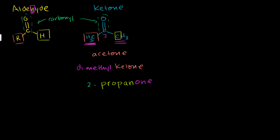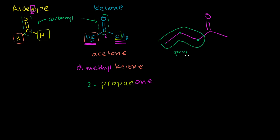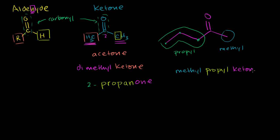Let's look at another molecule. Using the traditional naming method, on one end of the ketone we have one, two, three carbons — that's a propyl group. On the other side there's only one carbon — that's a methyl group. You name them in order of increasing group size, so methyl comes first. This gives us methylpropyl ketone, which is the common or traditional way of naming this molecule.